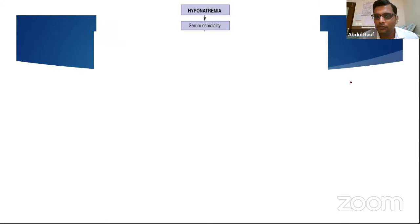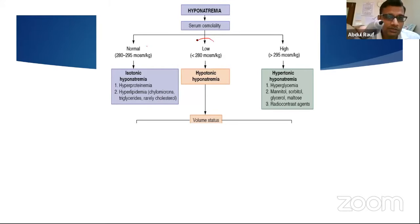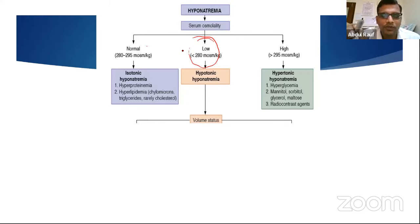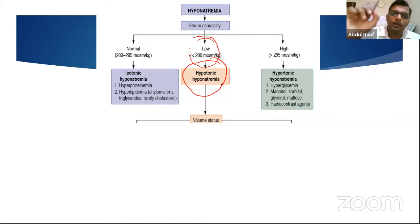Approaching hyponatremia: first, check serum osmolality. If true hyponatremia, osmolality should be low — this is hypotonic hyponatremia. If osmolality is normal, this is pseudohyponatremia, a laboratory artifact occurring with very high plasma protein (e.g., multiple myeloma) or high lipids (e.g., nephrotic syndrome, hypercholesterolemia). It does not occur with the direct ion-selective electrode method used by newer ABG machines. If osmolality is high with low sodium, this is hyperosmolar hyponatremia.